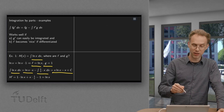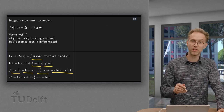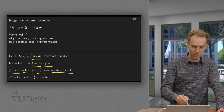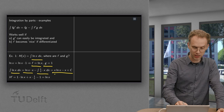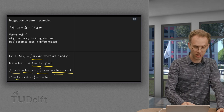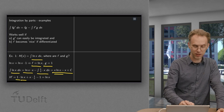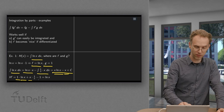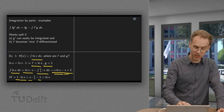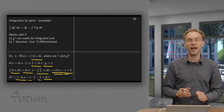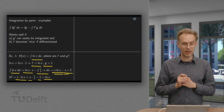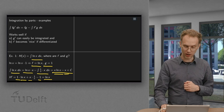So the antiderivative of ln(x) equals x·ln(x) minus x. Let us check: if we compute the derivative of x·ln(x) minus x, we get 1·ln(x) plus x·(1/x) minus 1, which is indeed ln(x). So this is correct.